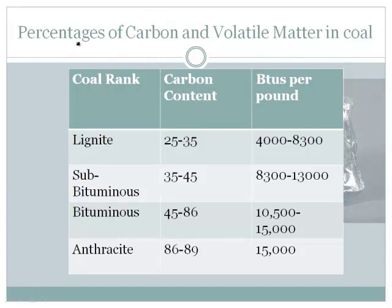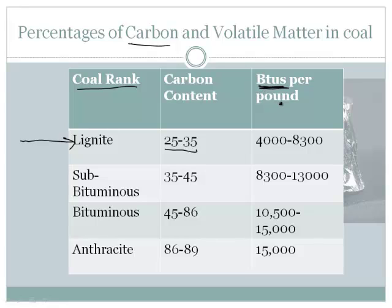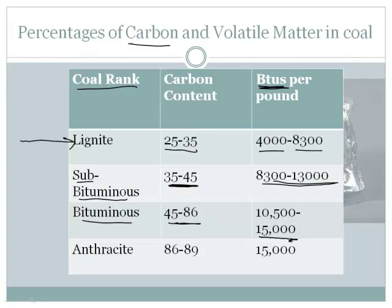Here are the different varieties of coal. There's lignite coal, with 25% to 35% carbon content and 4,000 to 8,300 BTUs per pound. Then there's sub-bituminous, with a higher percentage of carbon and more BTUs per pound. There's bituminous coal — even higher, giving about 15,000 BTUs per pound. And the best coal is anthracite, with 86% to 89% carbon and about 15,000 BTUs per pound. Of course, when burning coal you want the coal with the highest energy content. However, that's not the only consideration — you're also looking for what's called clean coal.